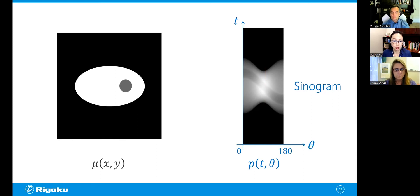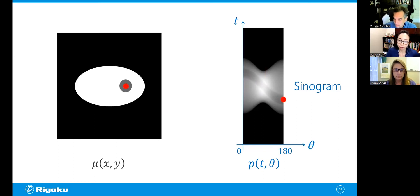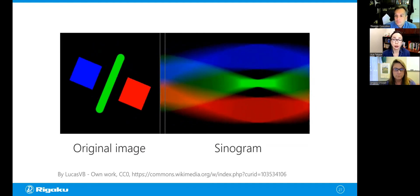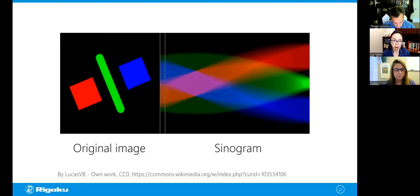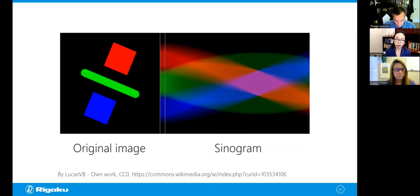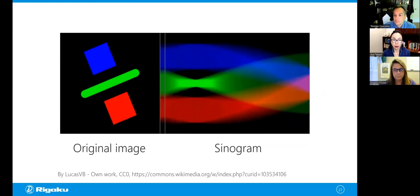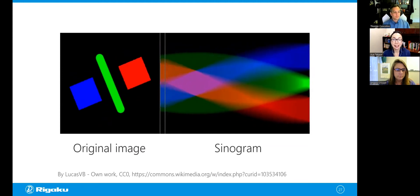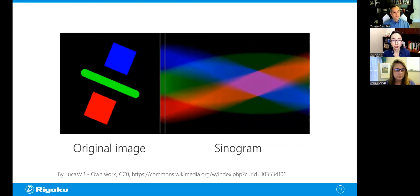Another way to look at this: focus on one spot in the sample — the egg yolk. That spot moves through the sinogram like a sine curve when you scan from zero to 180 degrees. That curve is essentially a sine curve, which is where the name 'sinogram' comes from. There is a movie created by a group of people to help visualize how projection measurements are put together in a sinogram. At this point you might be wondering — why do we need sinograms?